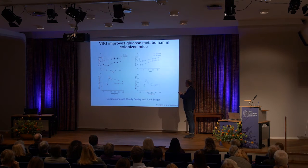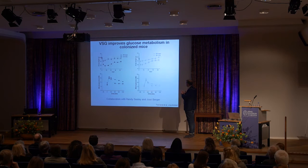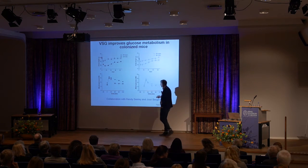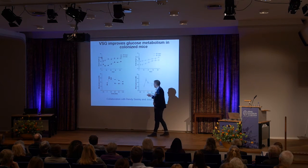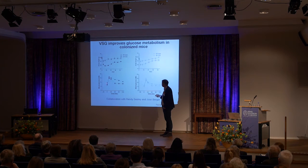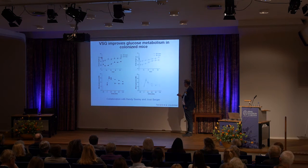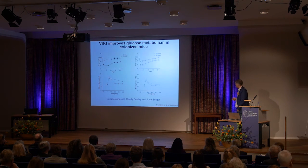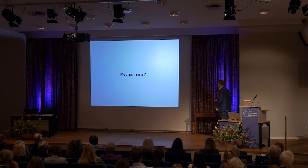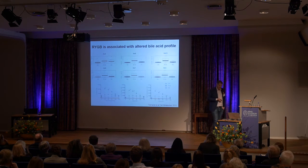We performed vertical sleeve gastrectomy in germ-free and colonized mice. In colonized mice, there is a strong, significantly different reduction in body weight at all time points. In germ-free mice, there is an initial drop in body weight, but it converges, becoming borderline significant after six weeks. For fasting blood glucose, the surgery significantly reduced it in colonized mice, and glucose tolerance tests showed improved glucose tolerance after surgery in colonized mice. In germ-free mice, there was no significant difference in glucose signaling — you need a microbiota to see the benefits.